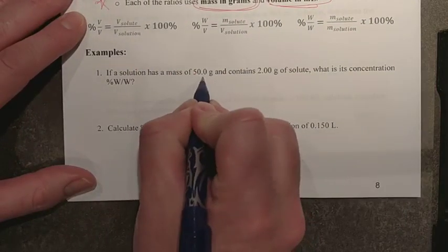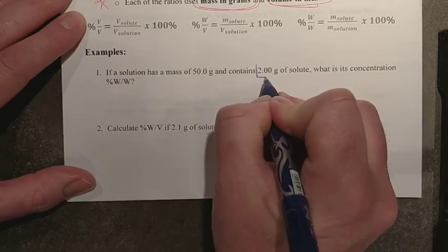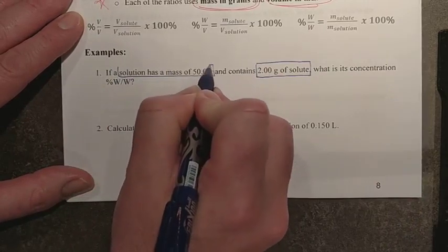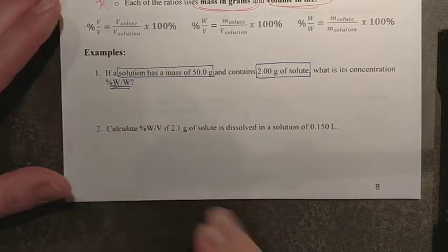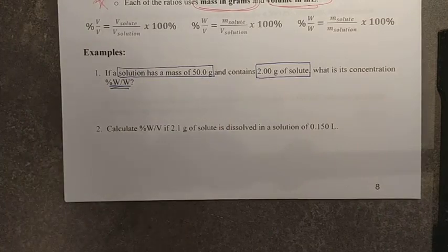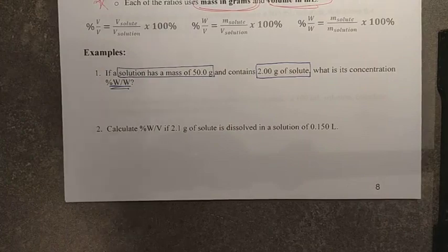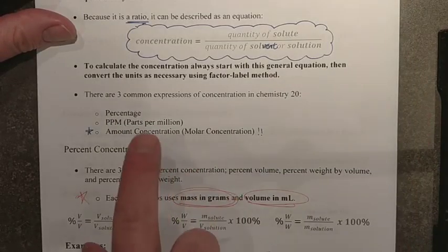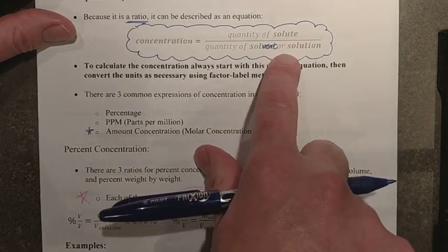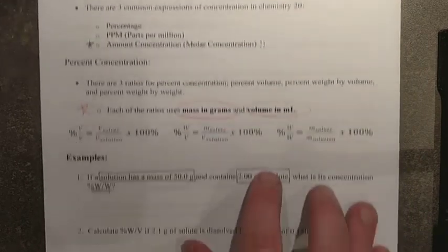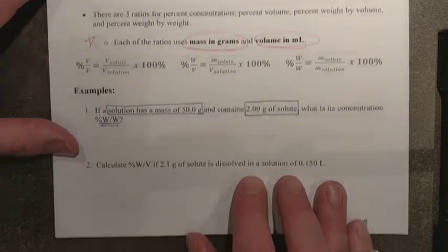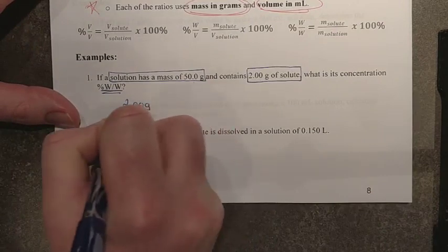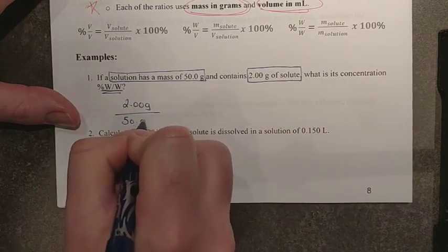If a solution has a mass of 50 grams and contains 2 grams of solute, well, there's your numerator. There's your solution mass, so we're just weighing the liquid in this case. We're being asked for weight by weight. So, remember, any masses or weights that you have here must be measured in grams. Both are, so now we just need to put the formula together. Remember, the formula is always this for all three types. It is the amount of solute over the amount of solvent or solution, and all we're doing is just following the correct units. So, for this one, then, my solute is 2.00 grams. My solvent is 50.0 grams.